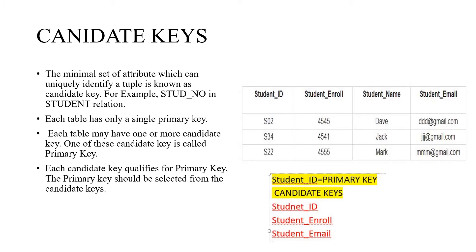Here I am showing a table that represents the student's information. In a relational data model, data is stored in the form of a table. Each column is known as an attribute and each row is known as a tuple or record. There are 4 attributes here: Student ID, Student Enrolled, Student Name, and Student Email.